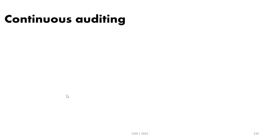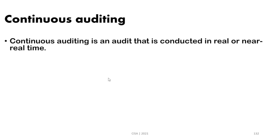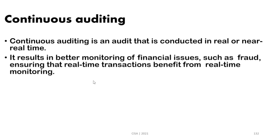The second part of this video is the continuous auditing concept. Continuous auditing means that auditing is conducted continuously in real or near real-time — instead of waiting from year to year or quarter to quarter for an audit, the audit is continuously conducted on systems. The result of continuous auditing is better monitoring of financial issues.